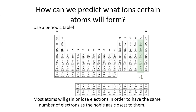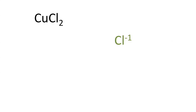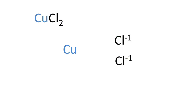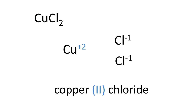So we know chlorine forms ions with a charge of negative one, and there are two chlorine ions in CuCl₂, meaning the total negative charge from the anions is negative two. Since the overall charge on an ionic compound must be neutral, the positive charge on the copper ion must balance out the negative charge from the two chloride ions — meaning the charge on the copper ion must be plus two. So the name for this formula is copper(II) chloride. The cation keeps its name, the anion ending changes to -ide, and we insert the Roman numeral after the cation name.